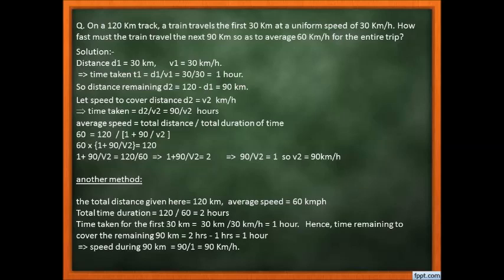There is also a simpler alternate method. Total distance = 120 km, average speed = 60 km/h, so total time = 120/60 = 2 hours. Time for the first 30 km = 30/30 = 1 hour. So remaining time for the 90 km = 2 − 1 = 1 hour. Speed for 90 km = 90/1 = 90 km/h. Much simpler!